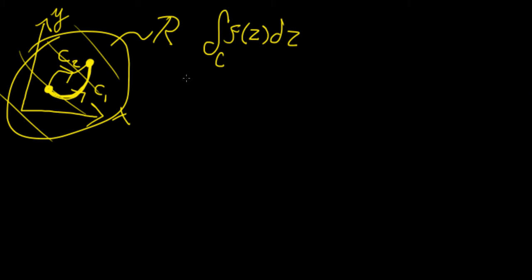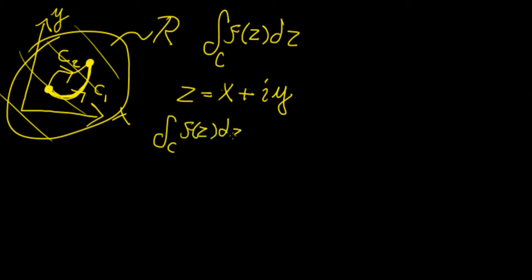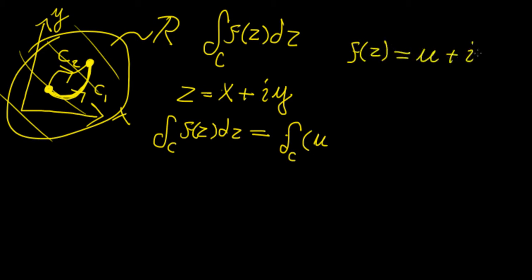We know from the construction of the complex variable z in terms of its real and imaginary parts that we can construct a function such that we have f(z) dz. Remember that we defined f(z) as u plus iv, where u and v are both functions of x and y. So we can write the following definition, which is the fundamental definition behind complex integrals.